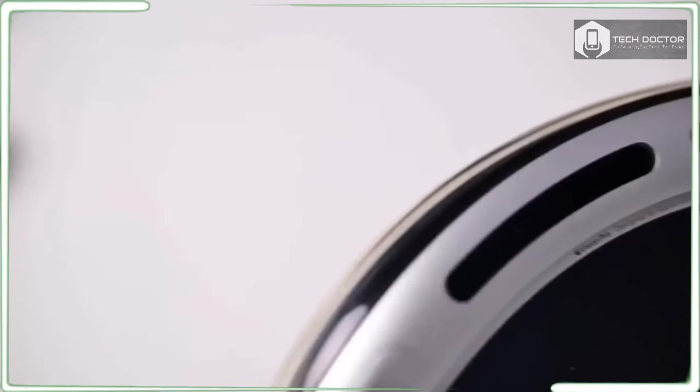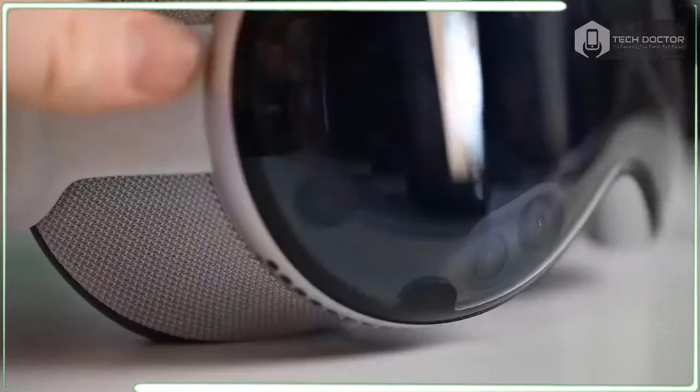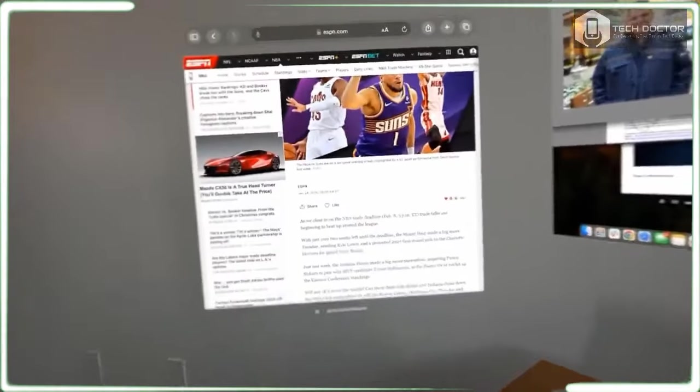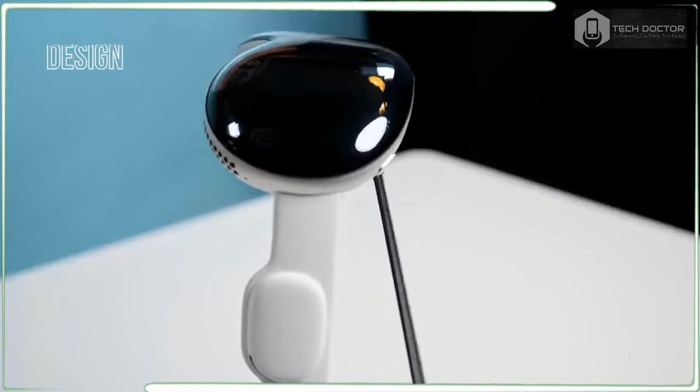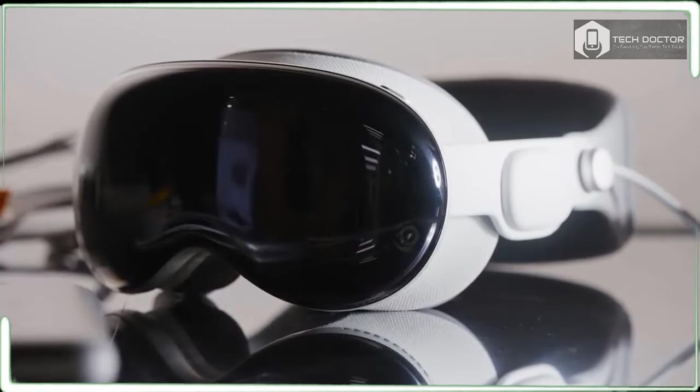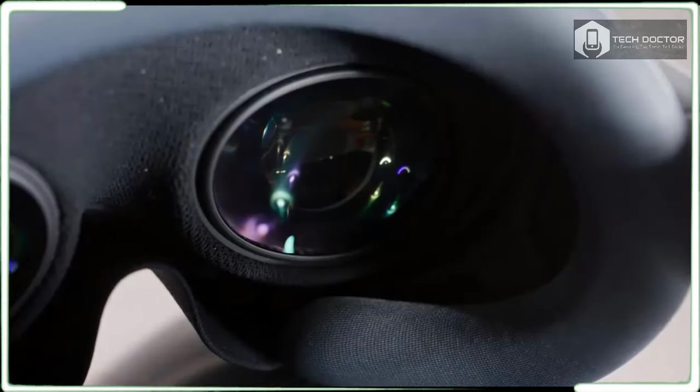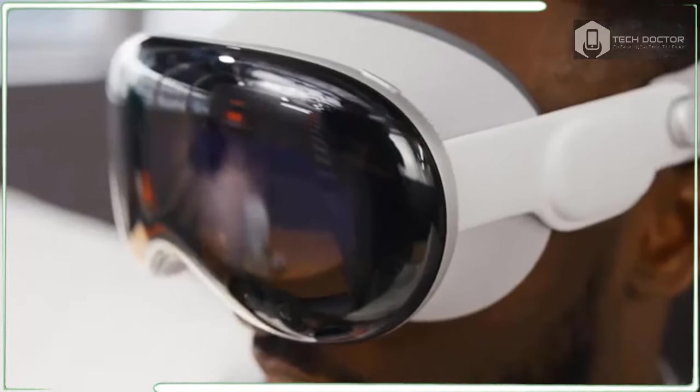The Apple Vision Pro comes in a pretty big box and there's lots of stuff in it, including the headset itself, the light seal fitted for your face, the light seal cushion, and both the solo knit band and dual loop band. There's also the Apple Vision Pro battery which remains tethered to the headset at all times, a second thicker light seal cushion, a polishing cloth, and a 30W USB-C power adapter.